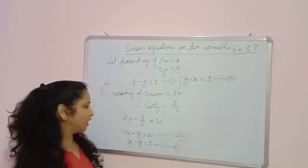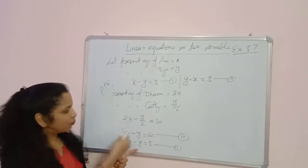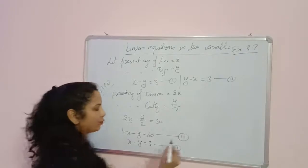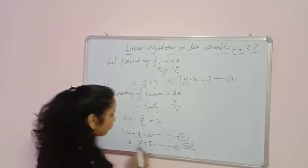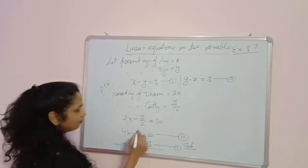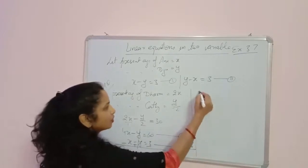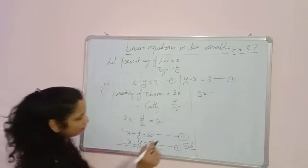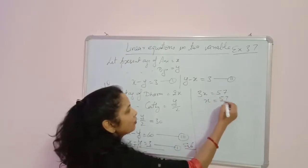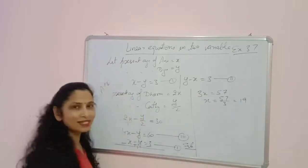Both y terms have the same sign, so we subtract the equations to cancel y. In subtraction we change the sign. We get 3x equals 60 minus 3, which is 57. So x equals 57/3, which is 19. x equals 19.